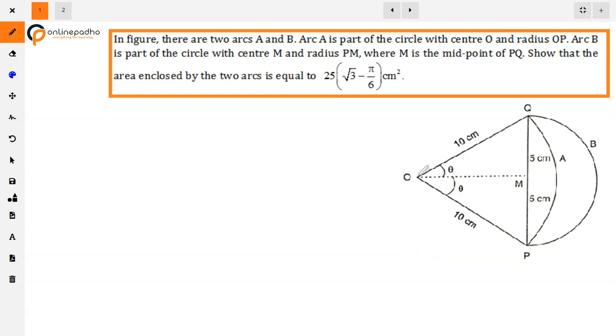Arc A has the center O and radius OP or OQ 10 cm. This is an arc, a sector of a circle. Then PQ is a chord, and M is the midpoint. This M is the center with radius 5 cm. The other arc is B. So between the two arcs enclosed, we have to find this area.